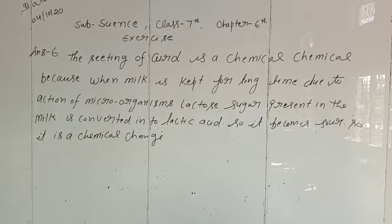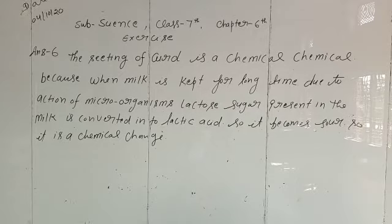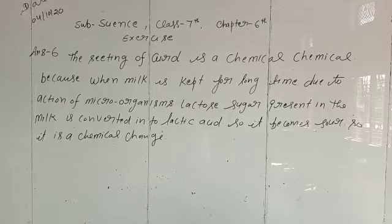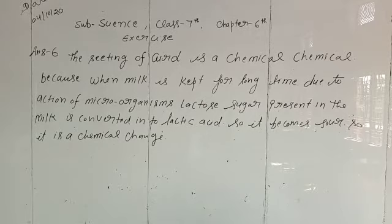Question number 6. How would you show that setting of the curd is a chemical change? Setting of the curd is a chemical change because when milk is kept for a long time, due to the action of microorganisms, the lactose sugar present in the milk is converted into lactic acid. So it will become sour in taste, and it is an example of chemical change.